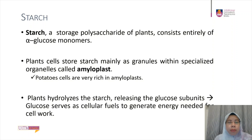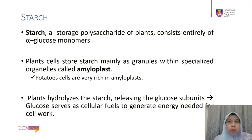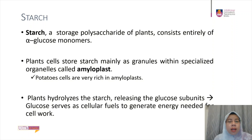Sugar can later be withdrawn from this carbohydrate bank via hydrolysis, which breaks the bonds between the glucose monomers. Most animals, including humans, have enzymes that can hydrolyze plant starch, making glucose available as a nutrient for cells and for cellular respiration. Potato, tuber, and grains are the major sources of starch in a human diet. For Malaysians, rice is a major source of starch.